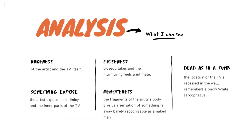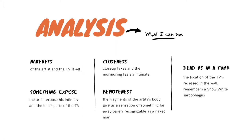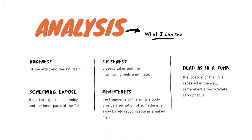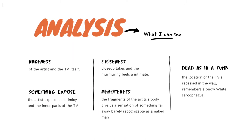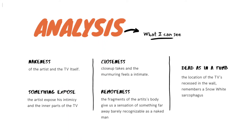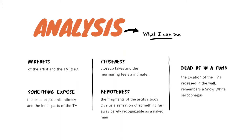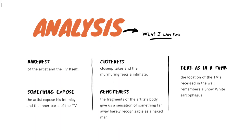In the analysis of what we can see: first, the nakedness of the artist and the TV itself; then the sensation of being exposed. The artist exposes his intimacy and the inner parts of the TV — both things are out of the boundaries of everyday life. Third, closeness: a feeling given by the close-up shots and the murmuring of the artist.